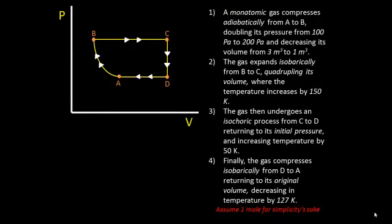Hi guys, we're given a PV diagram showing an ideal gas going through a cyclic process, taking it from state A to state B, to state C, to state D, and back to state A.